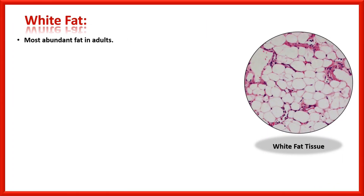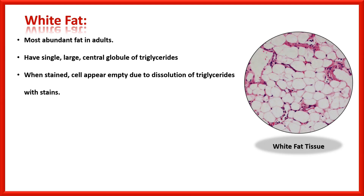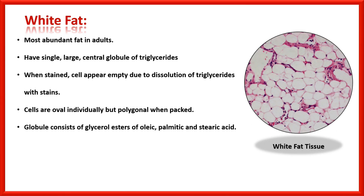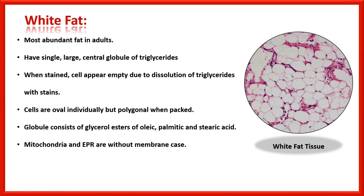White fat is the most abundant fat in adults. Fat cells have a single large central globule of triglycerides. When stained with different dyes, cells appear empty due to dissolution of triglycerides with the stains — the triglyceride is dissolved and not visible under the microscope. Cells are oval individually, but when packed, their shape becomes polygonal. The globule consists of glycerol esters of oleic, palmitic, and stearic acids. Notably, mitochondria and endoplasmic reticulum are without membrane casing and are in direct contact with the cytoplasm.